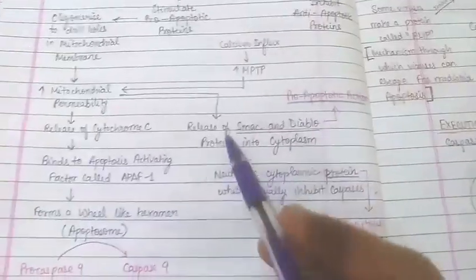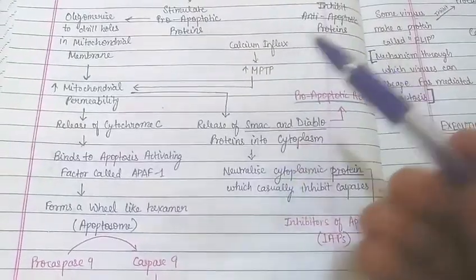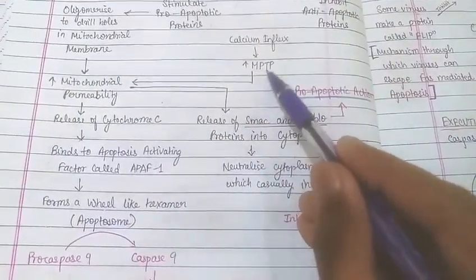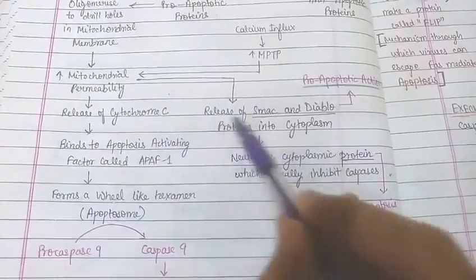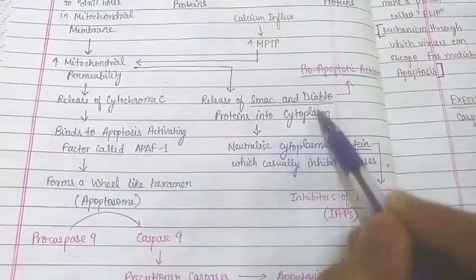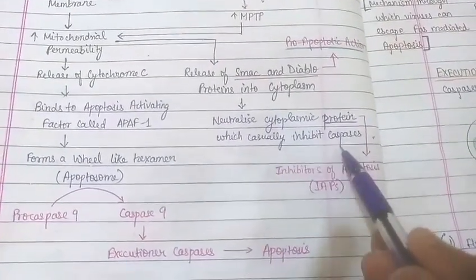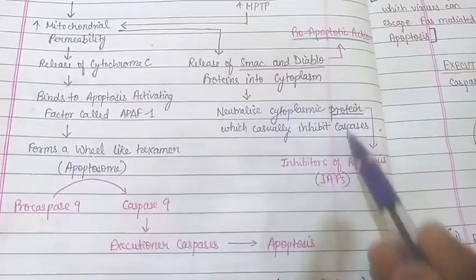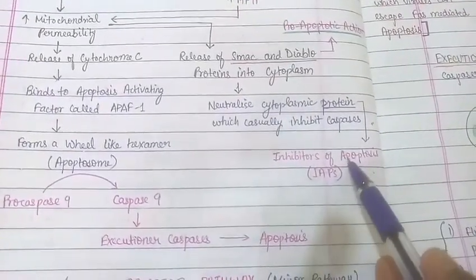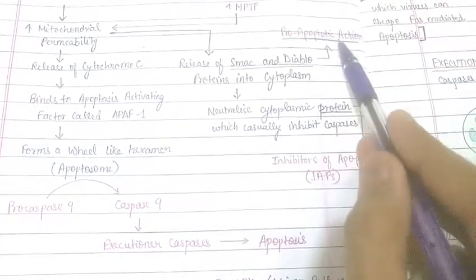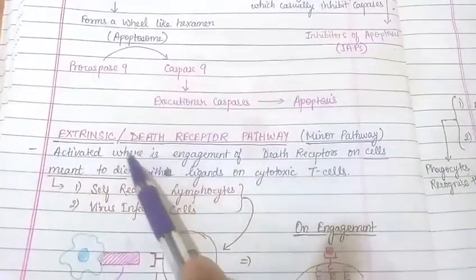Calcium influx also increases membrane permeability of the mitochondria, causing the membrane permeability transition pore to form. This increased mitochondrial permeability releases SMAC and DIABLO proteins into the cytoplasm. These neutralize cytoplasmic proteins that normally inhibit caspases — the inhibitors of apoptosis (IAPs). Therefore, SMAC and DIABLO have pro-apoptotic action.